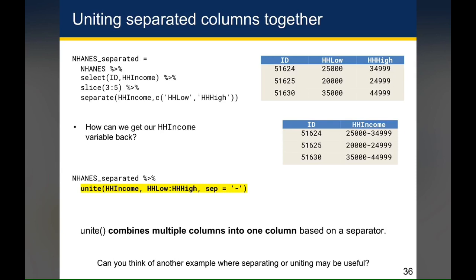Can you think of another example where separating or uniting might be useful? Let's say that you had separate columns for month, day, and year, and you wanted to combine those. How would you do that? Would you separate or unite? So the information you want is already in multiple columns and you want it back in a single column. And so since you're uniting, the function you would use is unite.